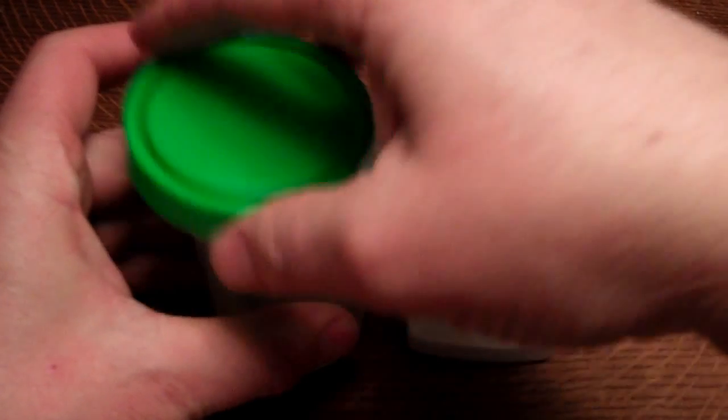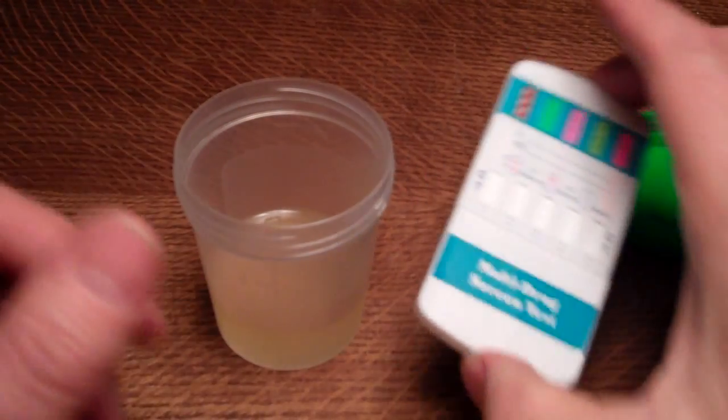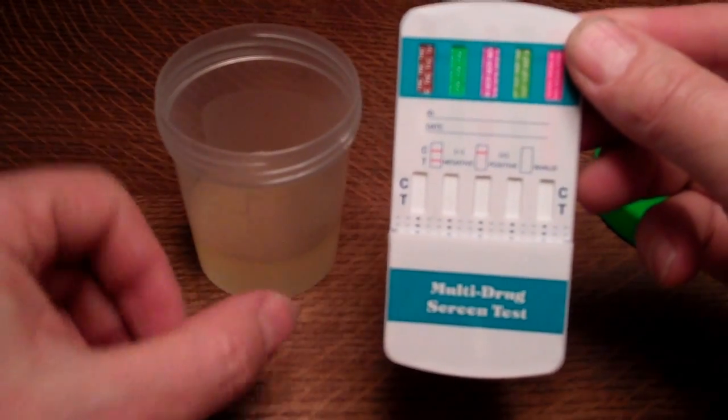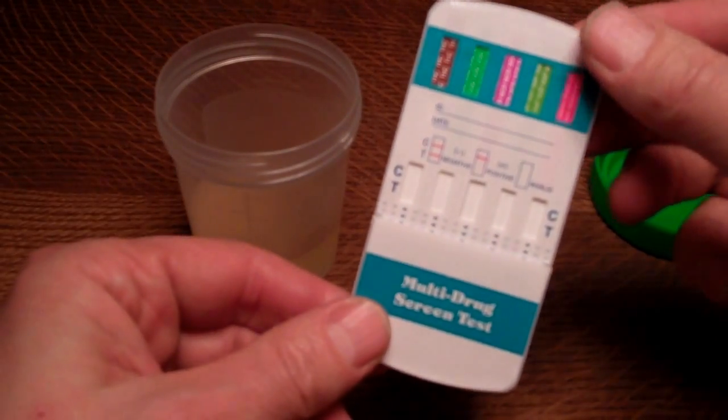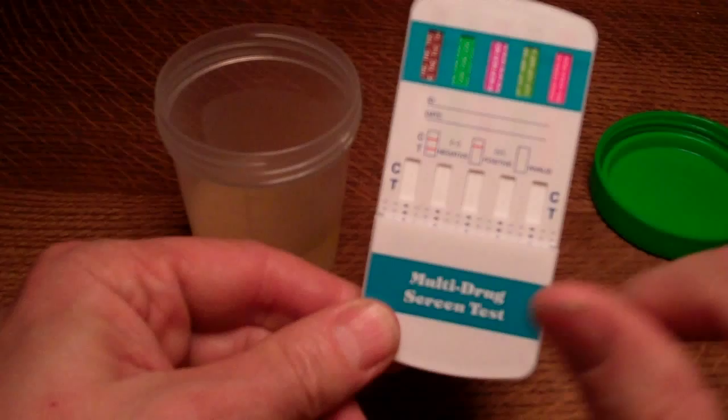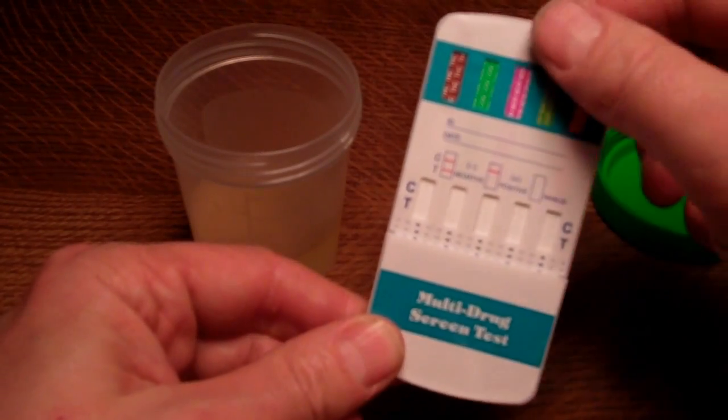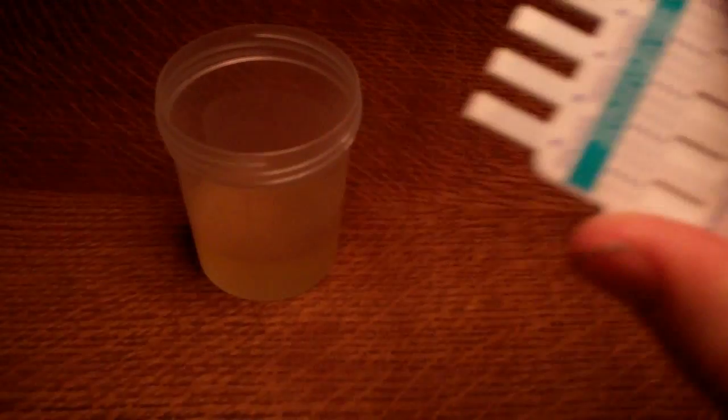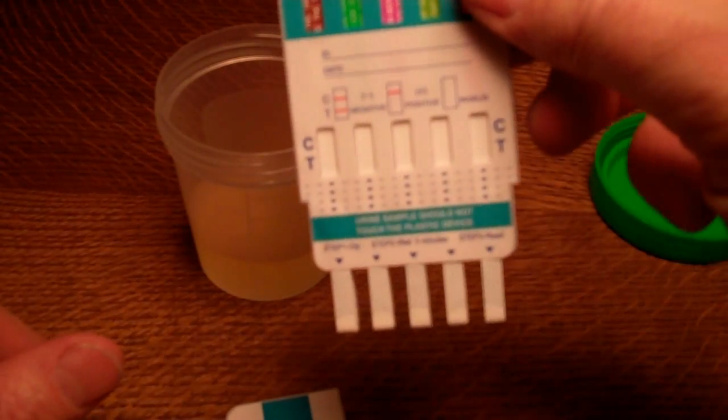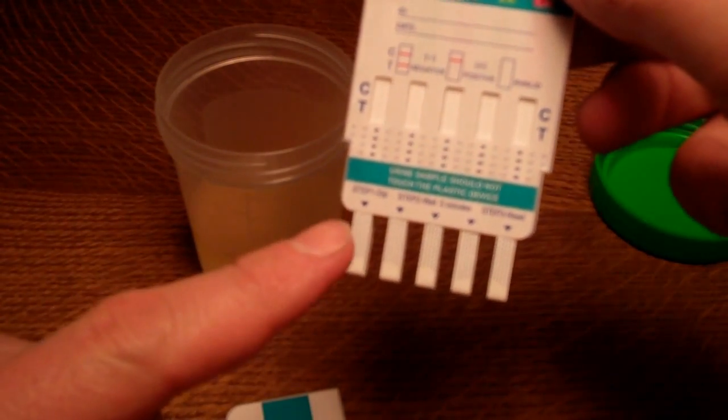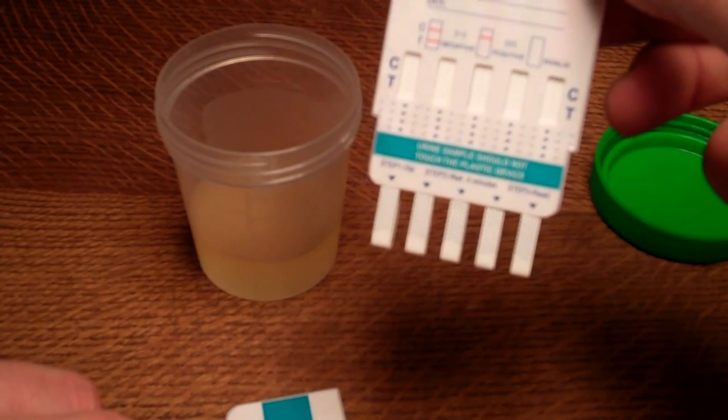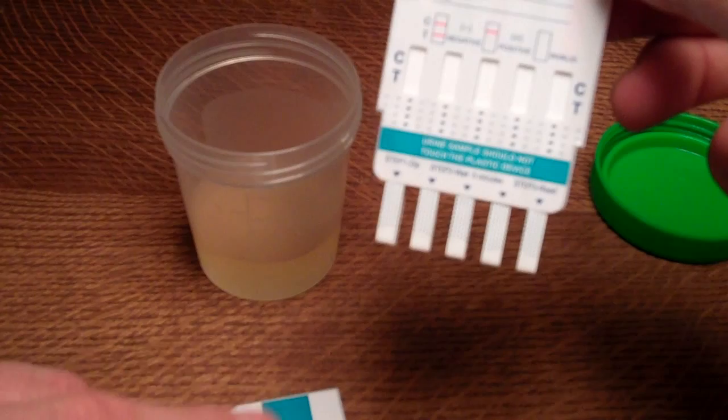So we're going to show you the procedure for running one of these tests. We've got a sample of urine here which we're going to use. The drug panel is a flat panel device with, in this case, five test membranes loaded into it and a cover which separates from the drug panel, revealing the prongs which are the dip prongs that go into the urine sample.